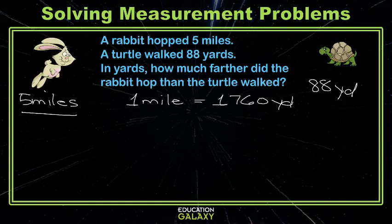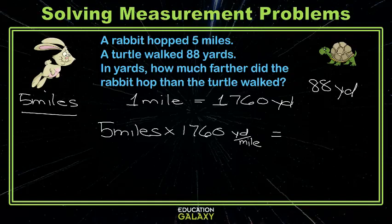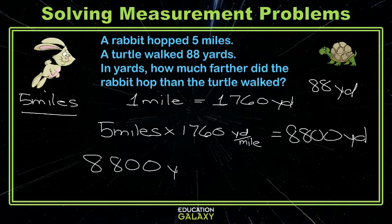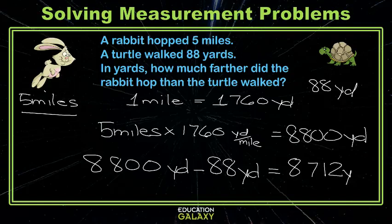To move from miles to yards we'll multiply our five miles by 1,760 yards per mile. You don't need to worry about writing out all those units. This gives us a grand total of 8,800 yards. Now we need to know the difference — how much farther did the rabbit go? That's 8,800 yards minus 88 yards, which gives us 8,712 yards.